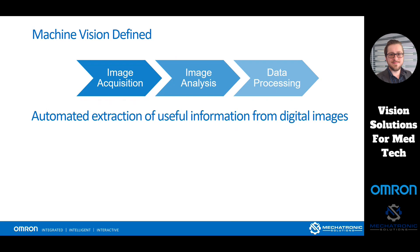My favorite definition of machine vision is the automated extraction of useful information from digital images. That's it — it's simple. We take a picture and we get some sort of information out of it to do something. We have three steps: image acquisition, image analysis, and data processing.